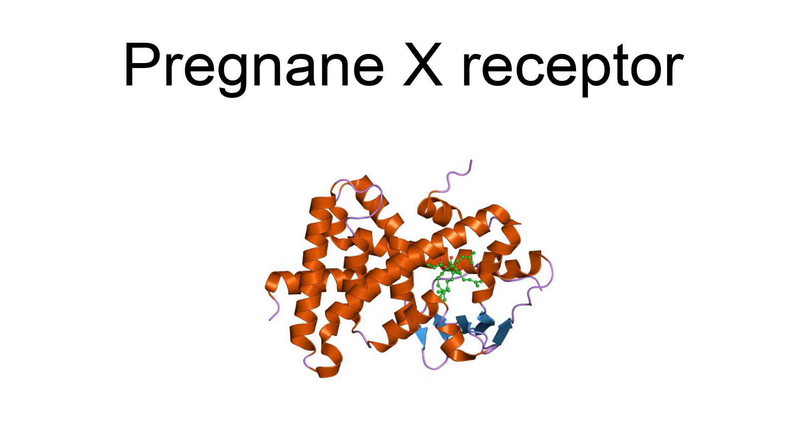PXR is a protein that in humans is encoded by the NR1I2 (nuclear receptor subfamily 1, group I, member 2) gene.